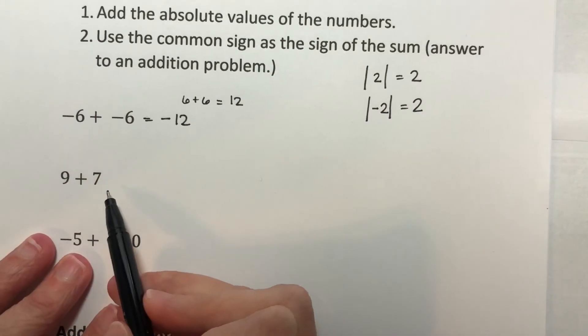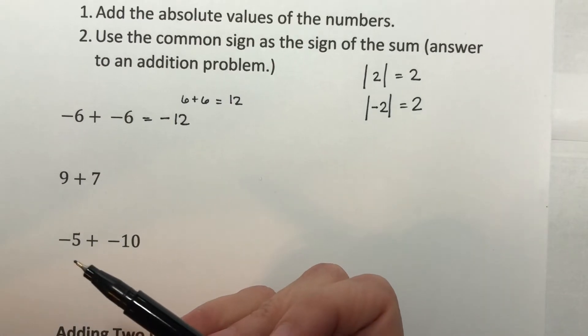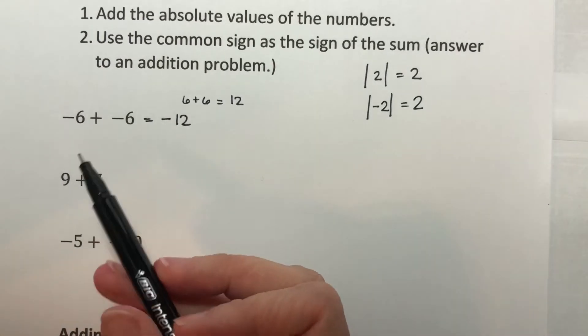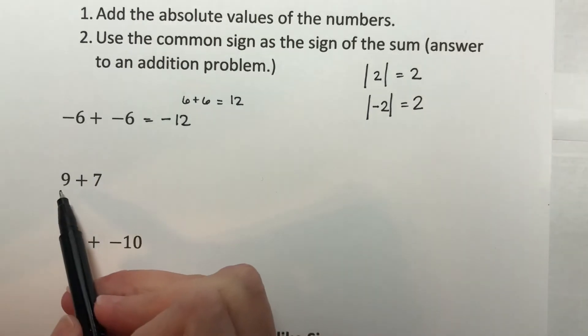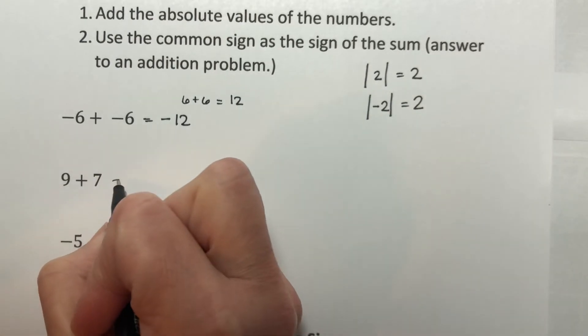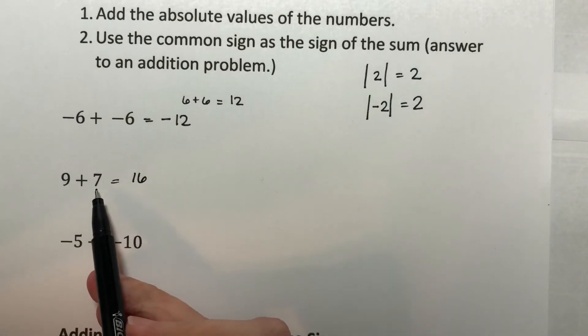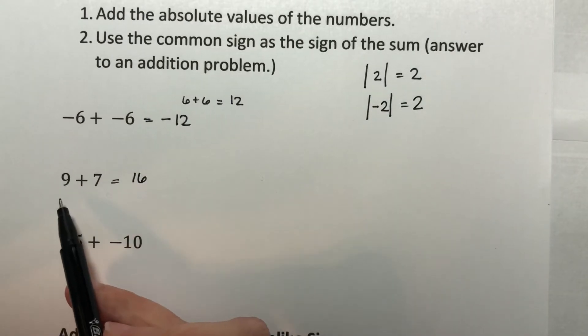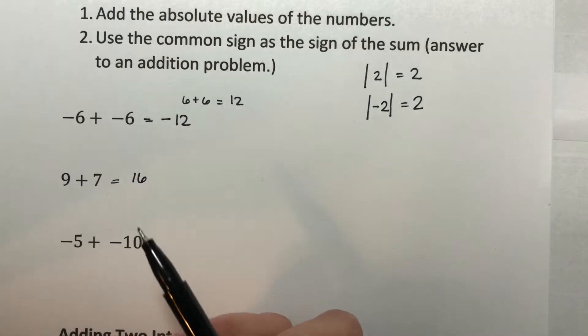Here, nine plus seven. Now you might think this is the same type of problem you've been working forever. And it is, it's just that these are both positive numbers. And just because you didn't know the rule that you were adding things with the same sign doesn't mean you weren't using it. So nine plus seven is 16. The absolute value of nine is nine. Absolute value of seven is seven. Add them together, you get 16. They're both positive. So your answer is positive.